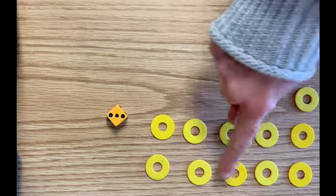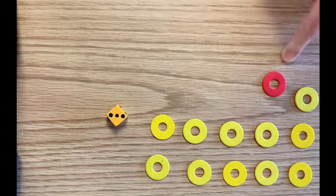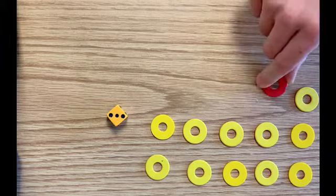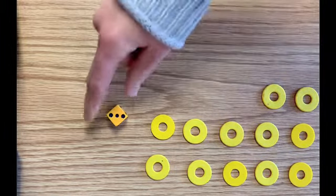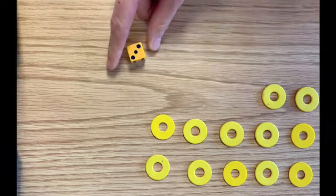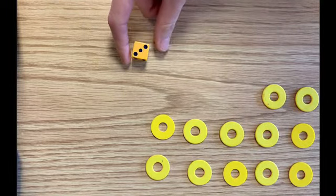I'm gonna start with them all yellow. You'll see these counters are double-sided and one side is yellow, one side is red. We're gonna start with them all yellow. We're gonna roll the dice two times and on the first roll we're going to pull that amount in yellow.